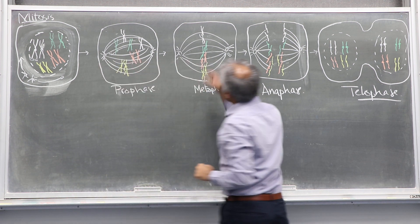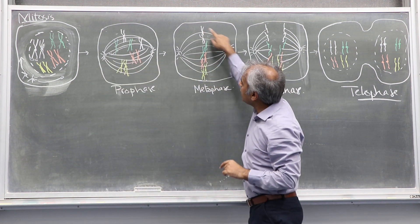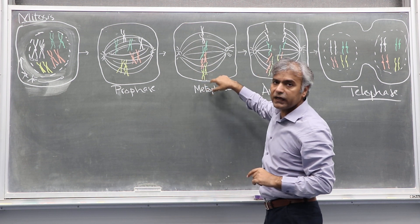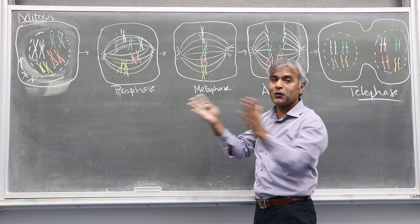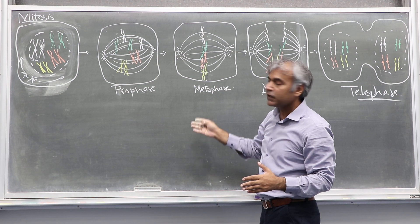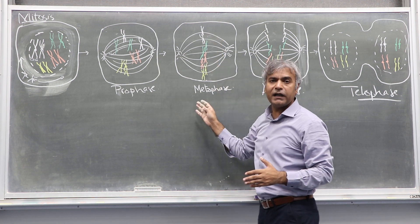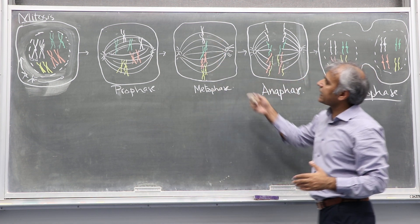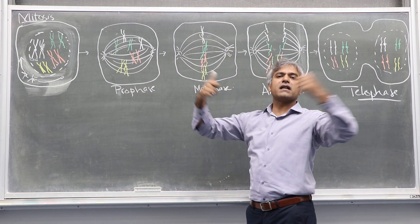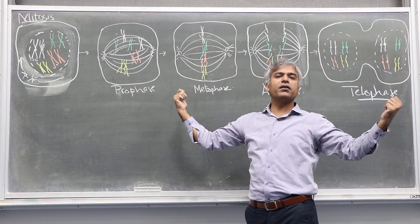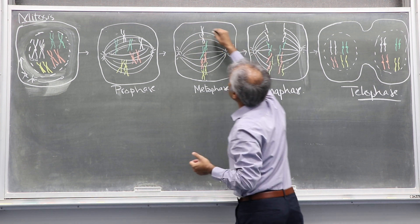This is also a very important checkpoint in cell division. The cell ensures that it has all the chromosomes on the mid-equatorial plate. Once you have all the chromosomes on the mid-equatorial plate, what happens next is these microtubules start retracting — they start pulling.